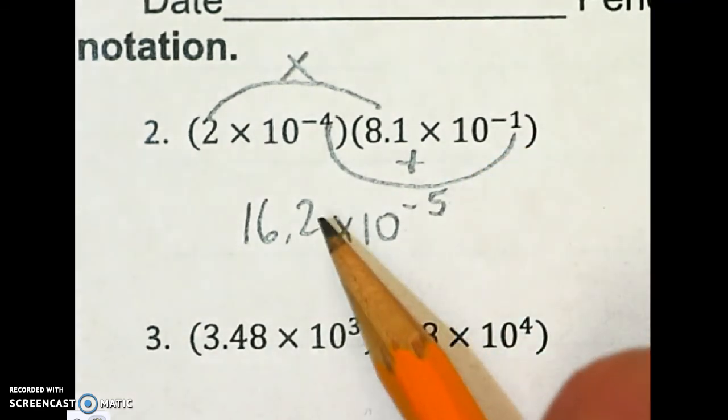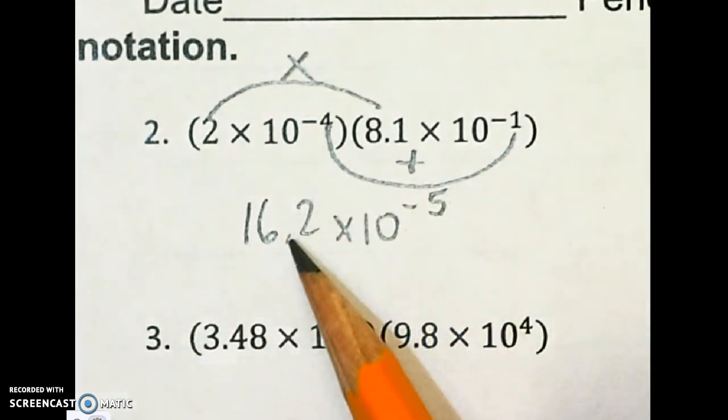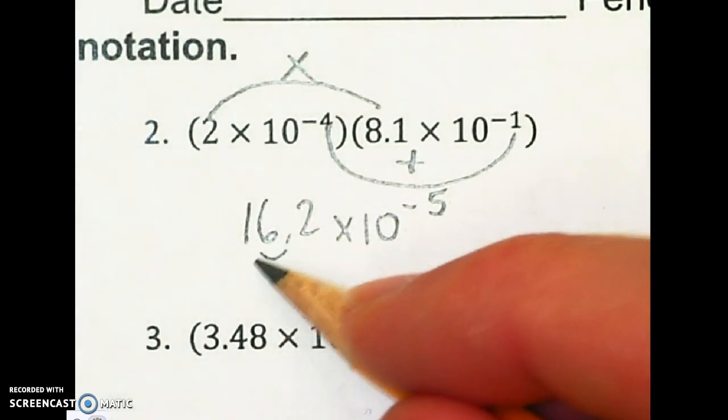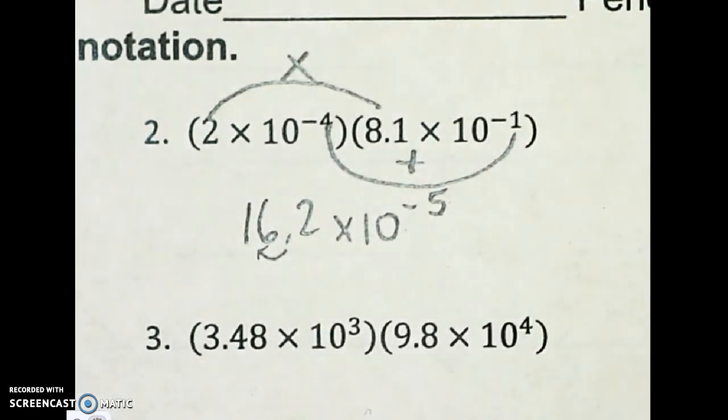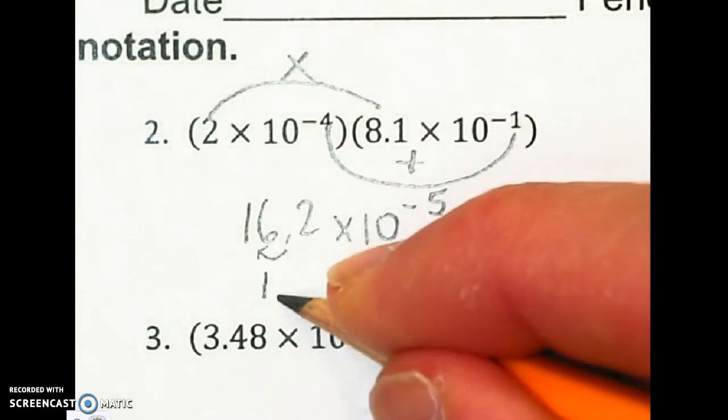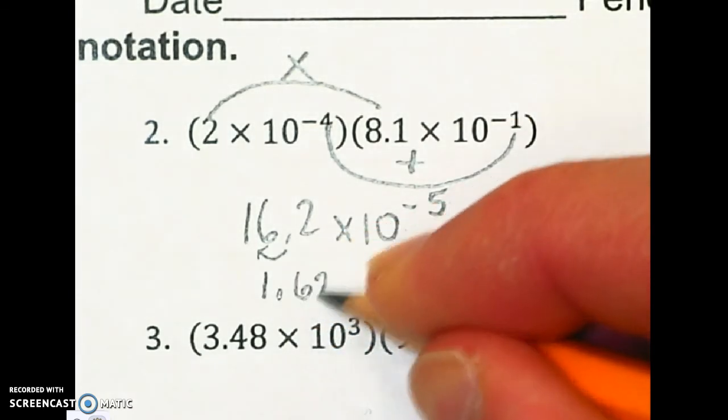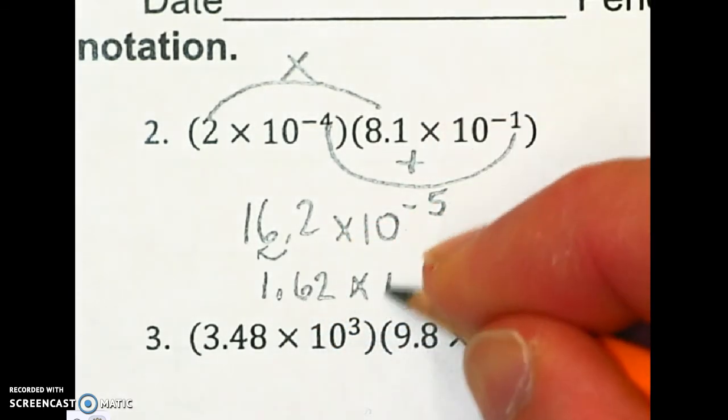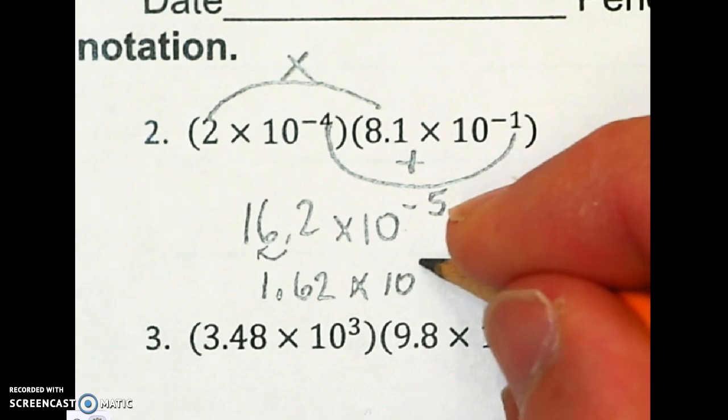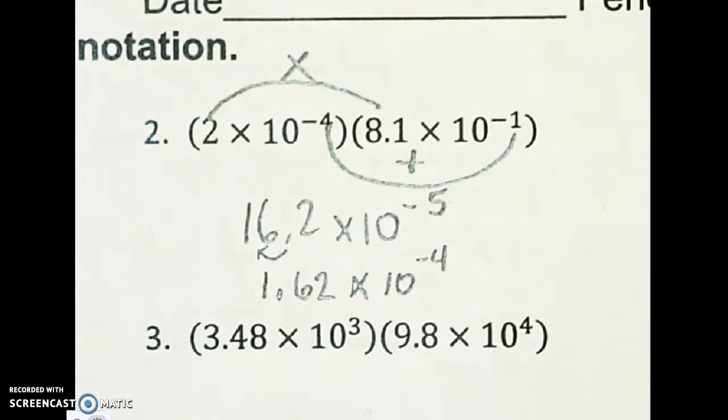I have to make sure this is in scientific notation, and it's not. The decimal is not in the right spot. I need to move it over again one place. So now it's going to be 1.62 times 10. And that ups my power by 1 to the negative 4. And there it is.